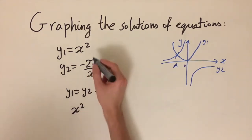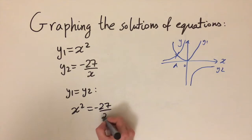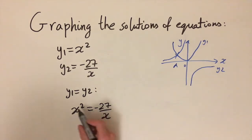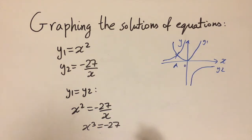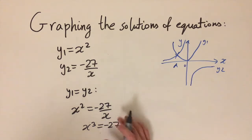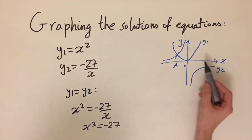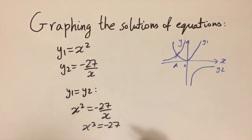Setting y1 equal to y2 gives x squared equals minus 27 over x. Multiplying both sides by x gives x cubed equals minus 27. This is a cubic equation without obvious standard techniques to solve, so we'll try substituting values. From the graph we know the solution is negative, so we need a negative number whose cube is minus 27.